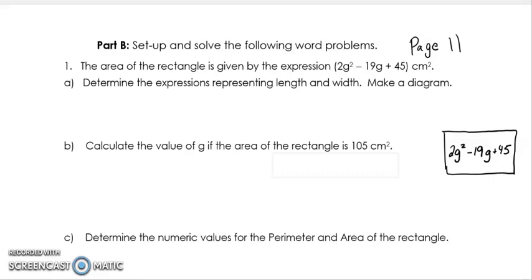Welcome back. I'm looking at page 11 in the workbook, chapter 5, and we're going to take a look at a couple of problems that are going to be solved by using factoring and equations. The question starts off telling you the area of a rectangle is given by the expression 2g squared minus 19g plus 45 square centimeters. Determine the expressions representing the length and the width.